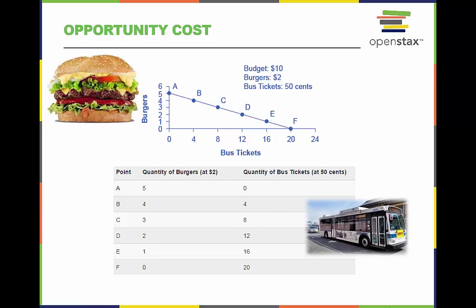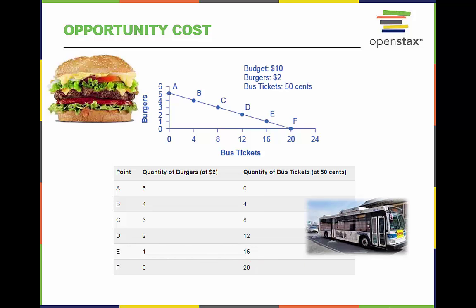For each burger you buy, how many bus tickets will you forgo buying? The answer is 4. This is the opportunity cost of buying a burger — one burger or four bus tickets. Opportunity cost is the cost of the next best option. In the case of buying burgers, it's bus tickets.